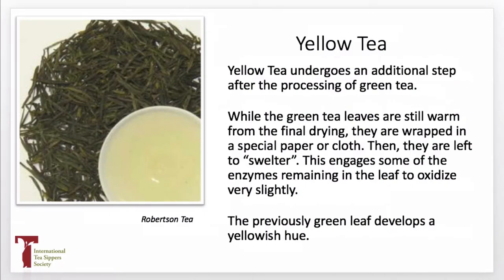Yellow tea is one additional step after the processing of a green tea, where the leaves are then wrapped in a special paper or cloth and allowed to swelter for a short period of time — think in terms of a day, not a week. Then the enzymes that still remain in the leaf create some additional oxidation that's more yellow, not brown. It changes the color of the dry leaf, the aroma of the tea, the flavor of the tea, and the color of the liquor.